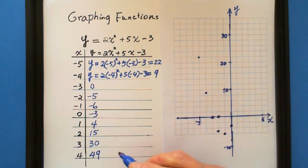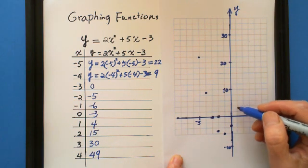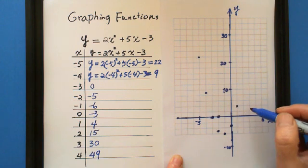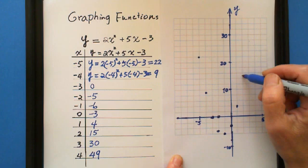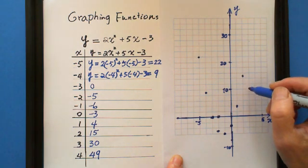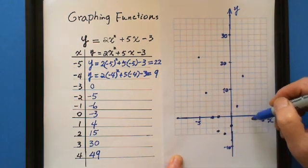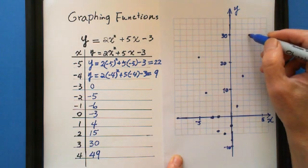And 1 is 4 and 2 is 15, 2 is 15 and 3 is 30, 3 is 30, here.